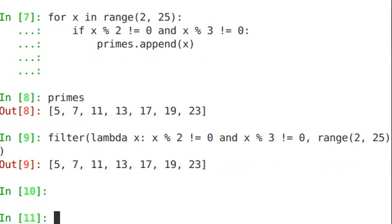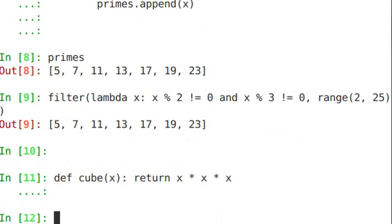The next functional programming tool is map. Instead of evaluating a function for true or false, in this case you can perform a transform on each item within a map. So let's take a look. We'll create a function called cube, and that's actually just going to return x times x times x. It cubes.